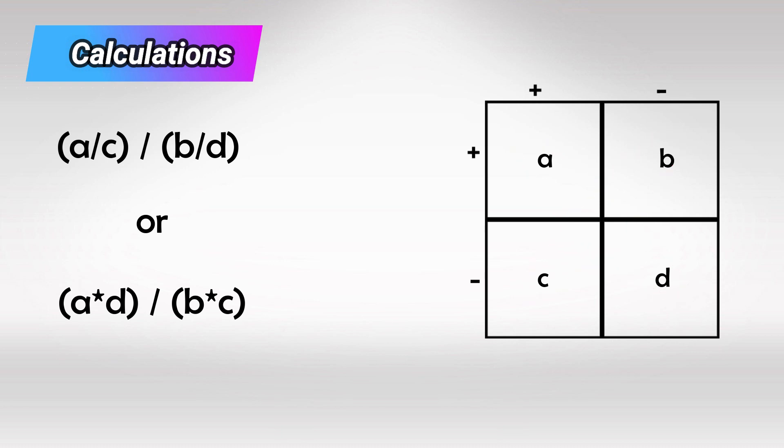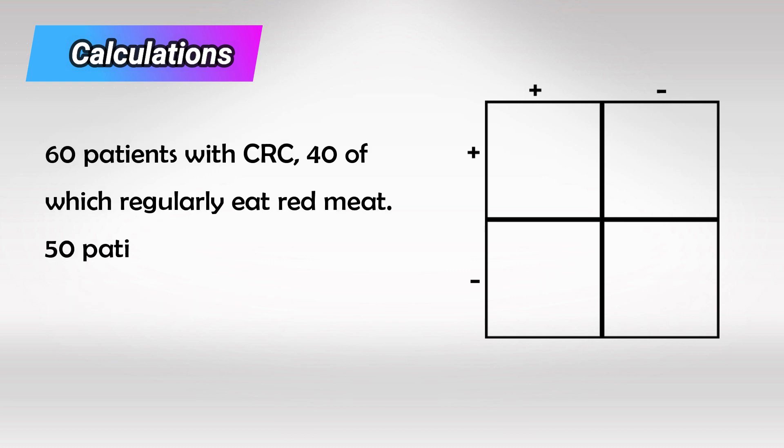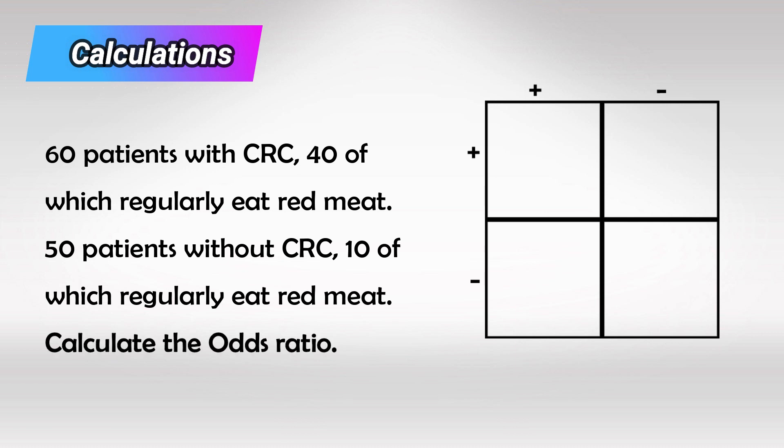Let's use an example. Let's say that we have 60 patients with colorectal cancer, and 40 of them were regularly eating red meat. And we have 50 patients who do not have colorectal cancer, and 10 of them were regularly eating red meat.